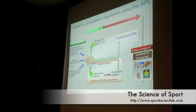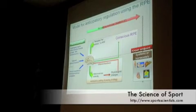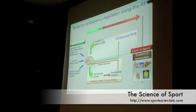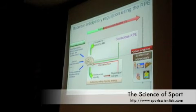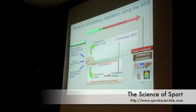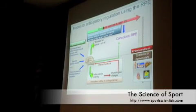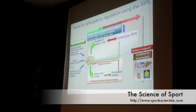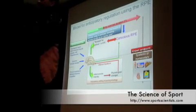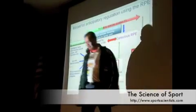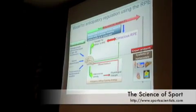Which is then interpreted in the context of how much of the exercise bout remains. So you may feel absolutely terrible, but it would be acceptable to you if you were one kilometer from the finish line. Whereas if you were 50 kilometers from the finish line, then it would seem unacceptable. So that perception of effort can only be interpreted using exercise duration remaining as an anchor point, and by comparing it to some pre-exercise anticipated RPE, which is where this template comes in. So that's the model for how we pace ourselves, pretty much.